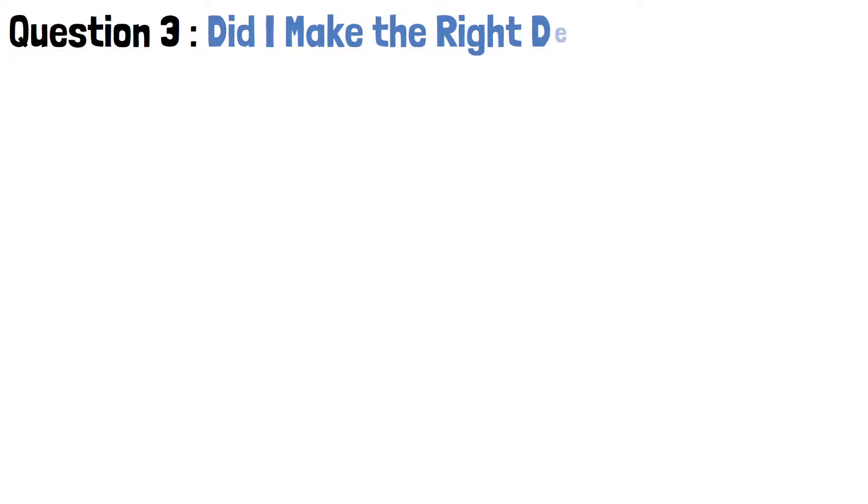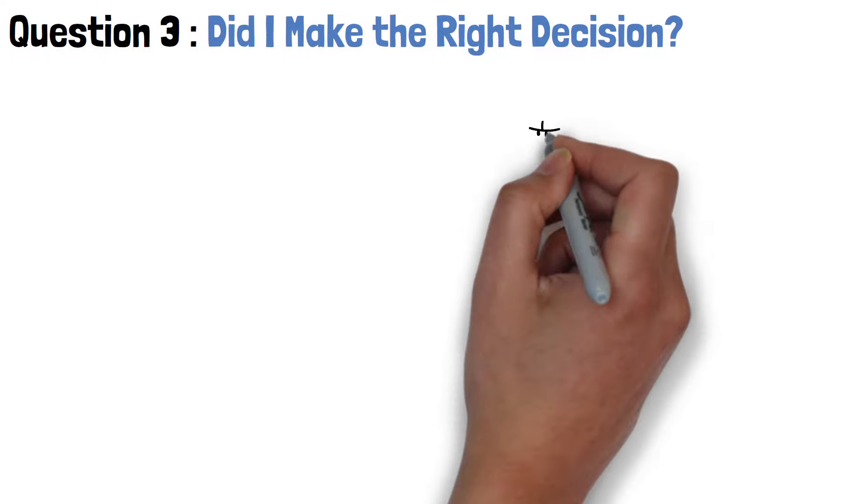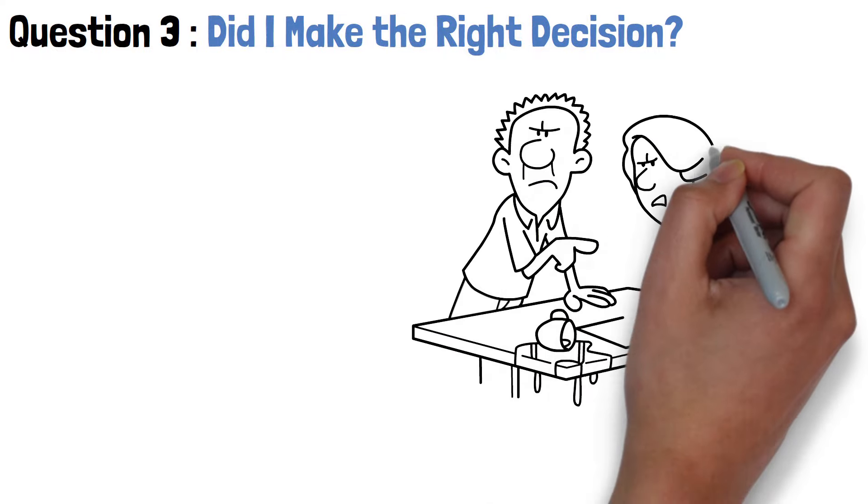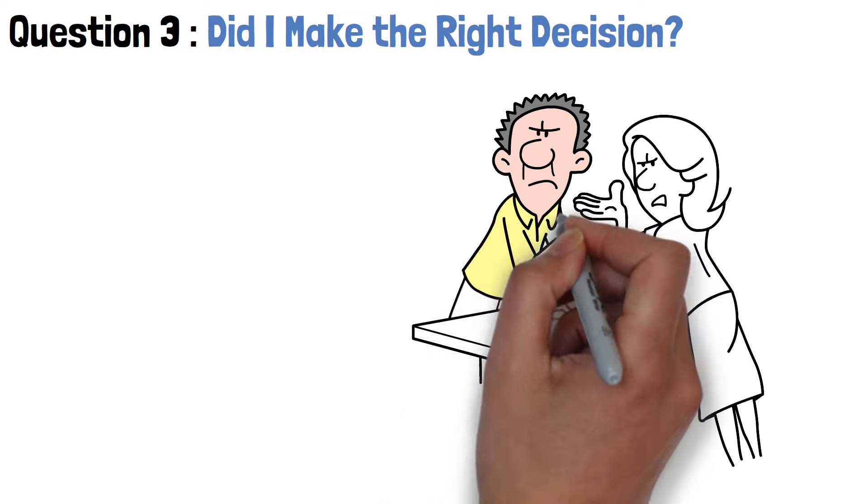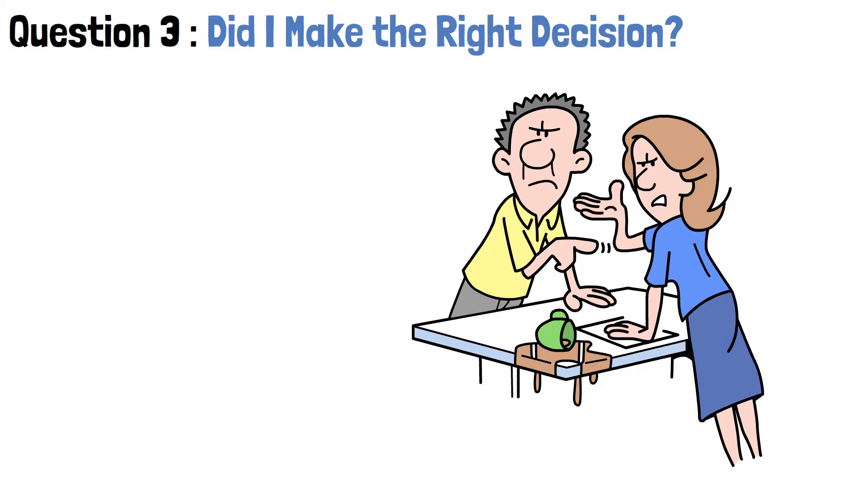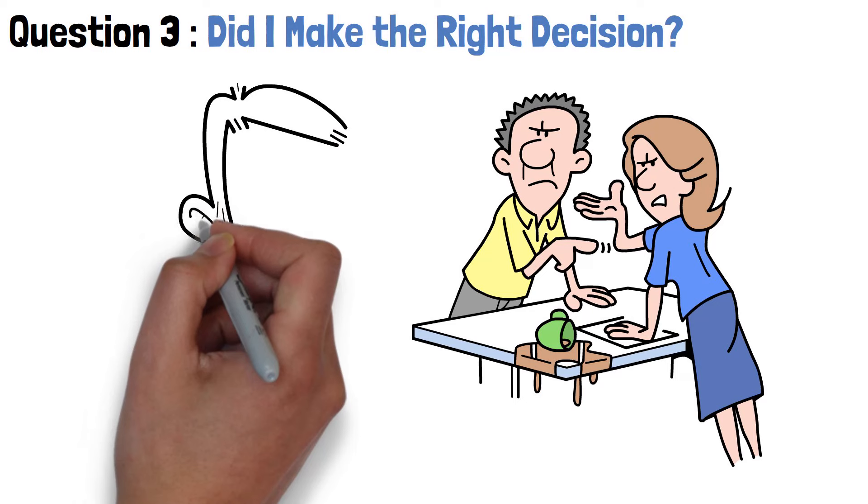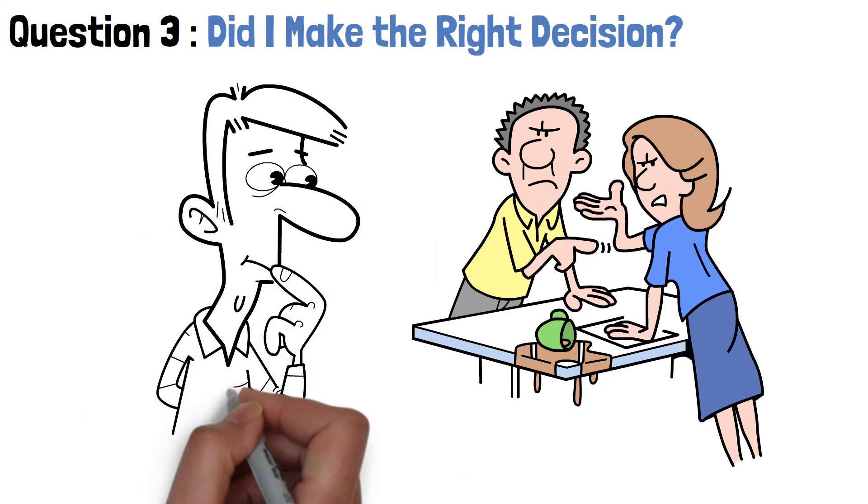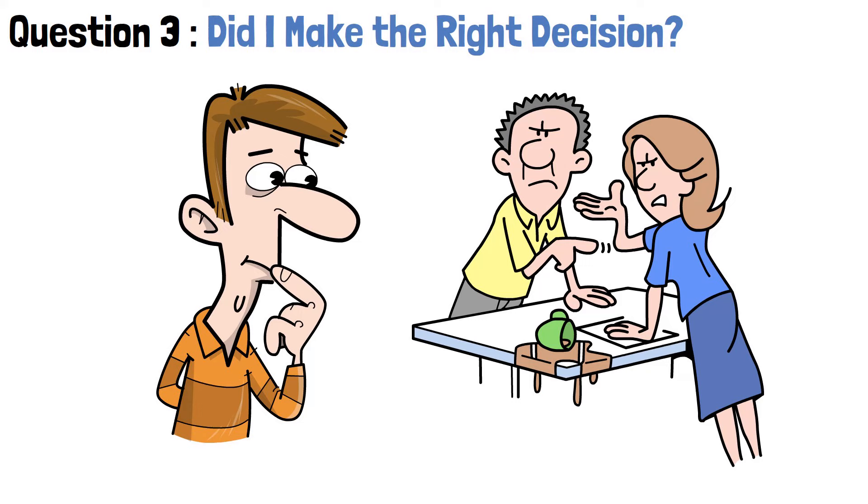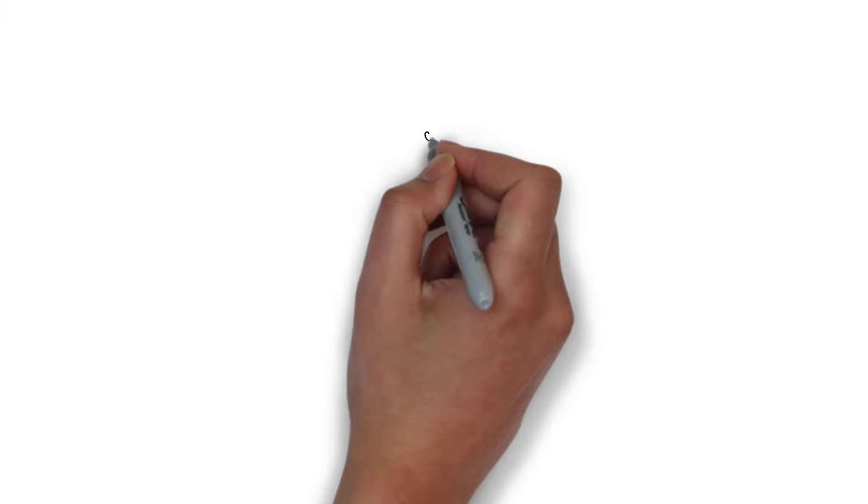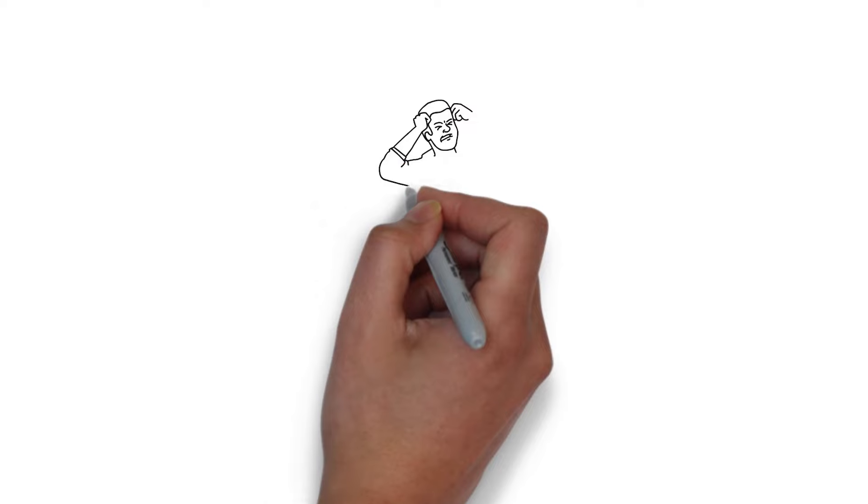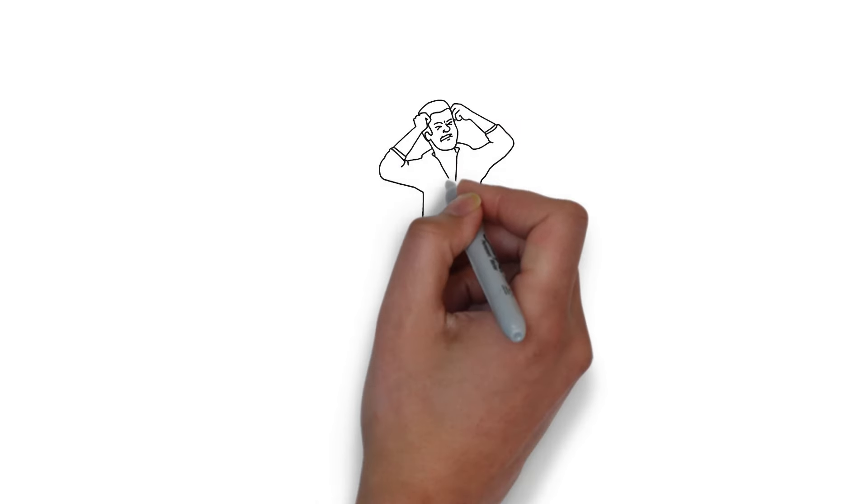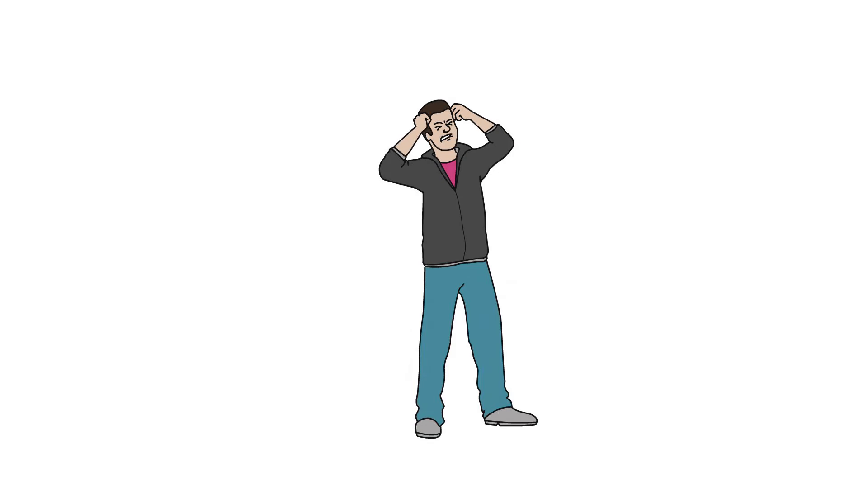Question 3. Did I make the right decision? The aftermath of a breakup can be tumultuous, filled with conflicting emotions and second-guessing. We may find ourselves oscillating between feelings of relief and regret. It's natural to wonder if we could have done more to salvage the relationship or if ending it was a hasty decision. We may fear that we've made a mistake and question if we'll ever find closure. However, it's important to recognize that decisions made in moments of emotional distress are often clouded by heightened emotions and limited perspective.